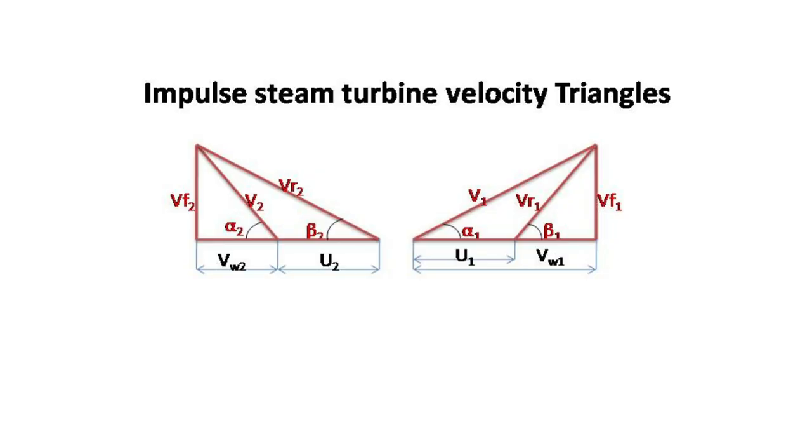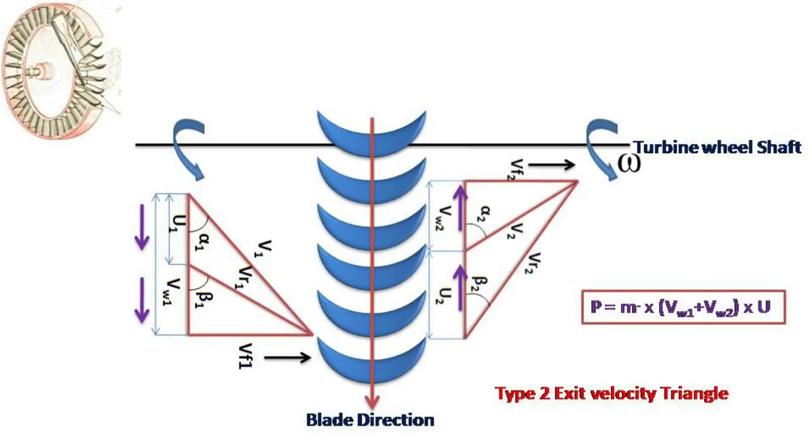These are generalized velocity triangles which we have drawn for impulse steam turbine. In these velocity triangles, the absolute velocity at the entrance and exit splits into tangential and axial velocity components. Tangential velocity component moves the blade whereas axial velocity component won't do any work other than applying axial force on the turbine blade.